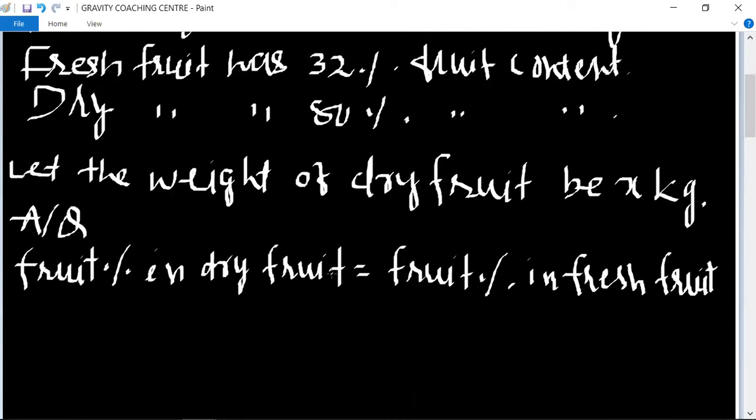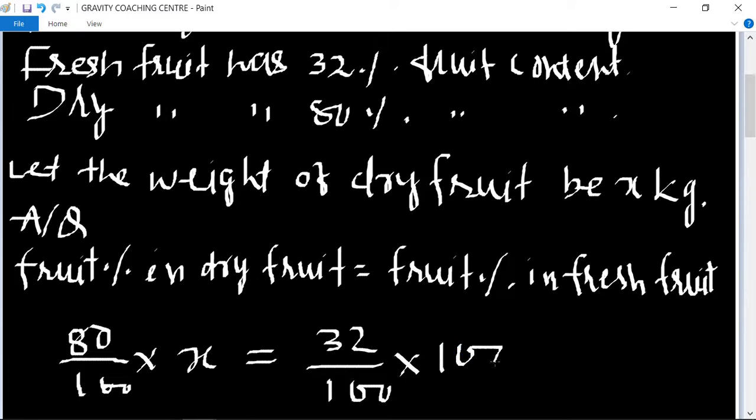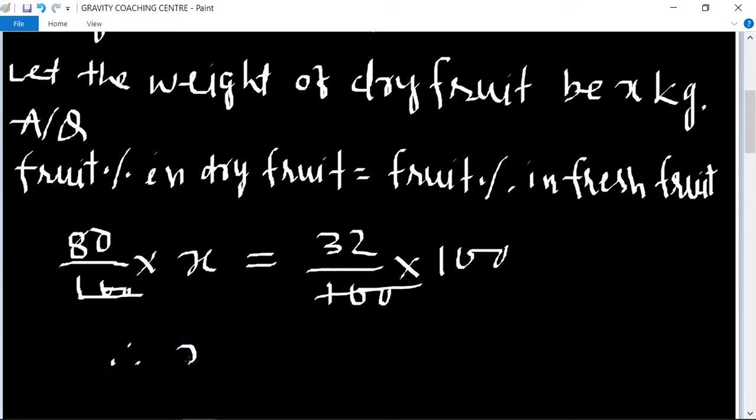So 80% of x equal to 32% of 100. Cancel zeros and 8 goes into 32.